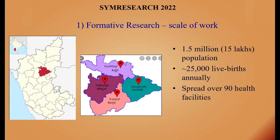The geography was one district in the northern part of Karnataka called Koppal District, where health indicators are typically worse than in Bangalore. The district has a total population of just over 15 lakhs. Annually, we anticipated about 25,000 live births spread over 90 health facilities — 50 government and 40 private.